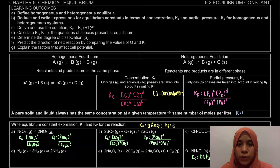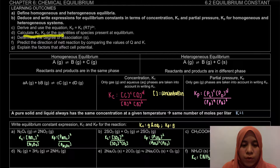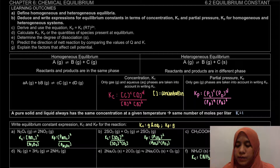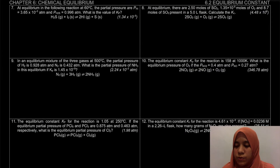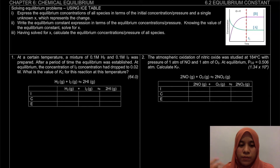Assalamualaikum and hello everyone. Welcome to a new video for 6.2 where we will learn to calculate KC, KP, or the quantities of species present at equilibrium. For this calculation we will use an ICE table. All units will be on page 7. So why do we need to use an ICE table?